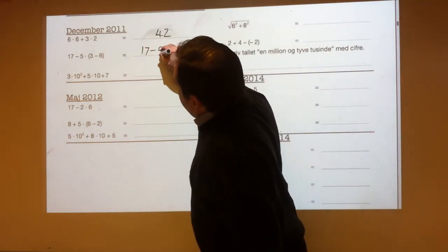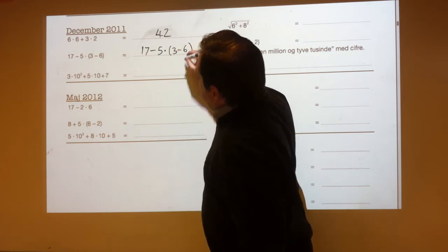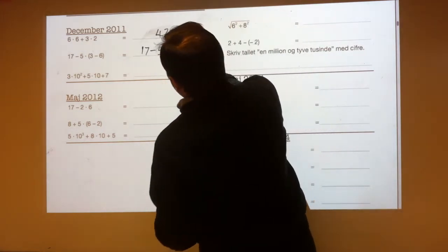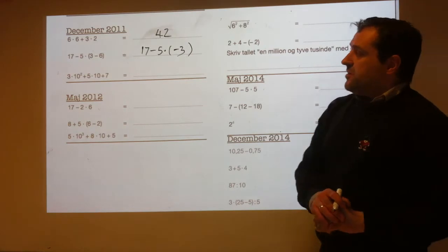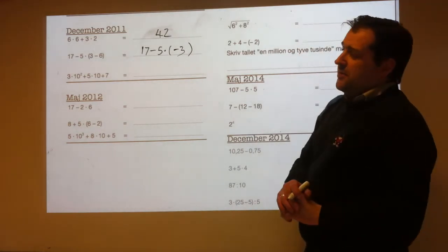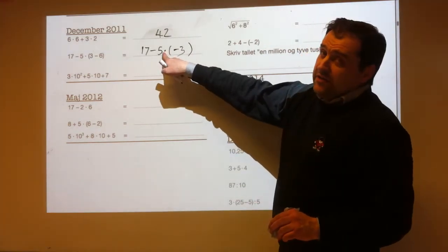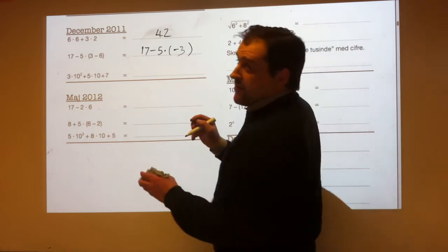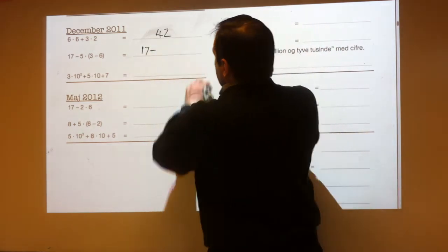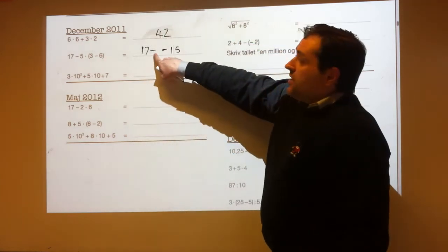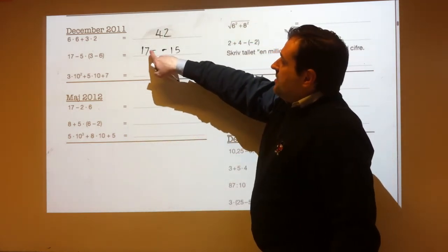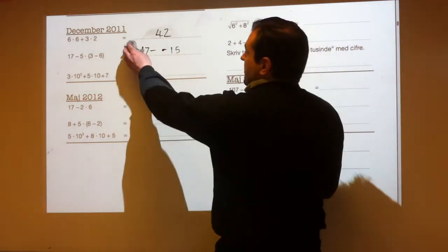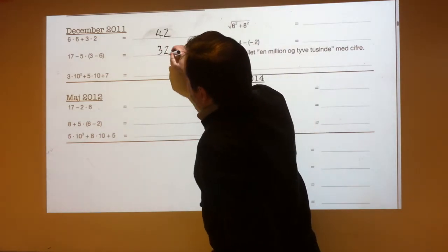17 minus 5 times (3 minus 6). Do the bracket first: 3 minus 6 is minus 3. So it's 17 minus 5 times minus 3. Do the multiplication: 5 times minus 3 makes minus 15. There was already a minus there, so you've got 17 minus minus 15. Minus minus makes plus, so that's the same as 17 plus 15, which is 32.